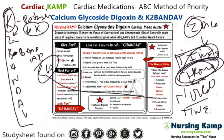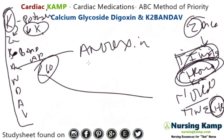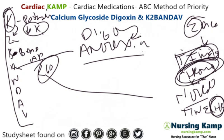Anorexia is the next letter. Anorexia is a sign that they're toxic. So when you see digoxin in questions and you see anorexia — anorexia meaning the person isn't hungry — that's significant.